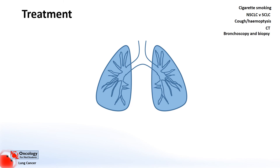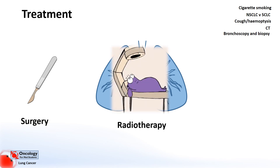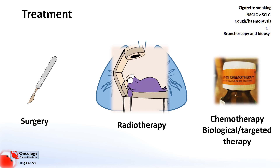Treatment options, as with the majority of cancers, involve surgery, radiotherapy, chemotherapy, and biological therapies. Surgery tends to be more useful in non-small cell lung cancers, as small cell cancers have often spread by the time they are diagnosed, at which point surgery is not usually beneficial. Surgery usually involves the removal of an affected lobe or an entire lung. Radiotherapy is useful for both small cell and non-small cell lung cancers. Chemotherapy is the main treatment used in small cell lung cancers, and in non-small cell lung cancers it can be used after surgery as adjuvant chemotherapy, before or alongside radiotherapy, or for locally advanced and metastatic cancers. Some biological therapies, also known as targeted therapies, have been found to be useful in metastatic non-small cell lung cancers.